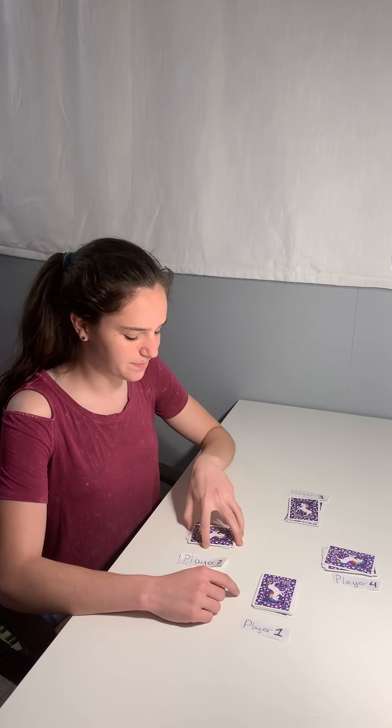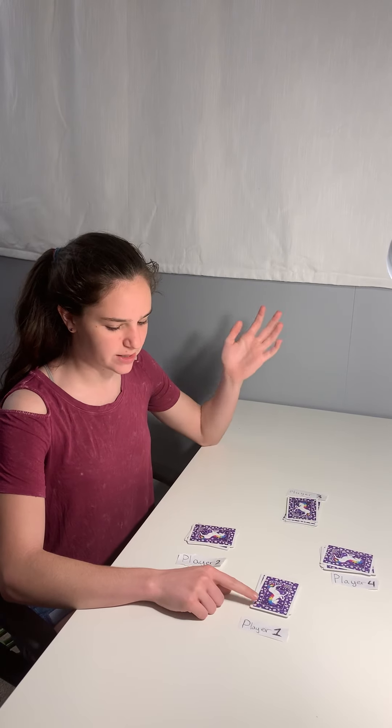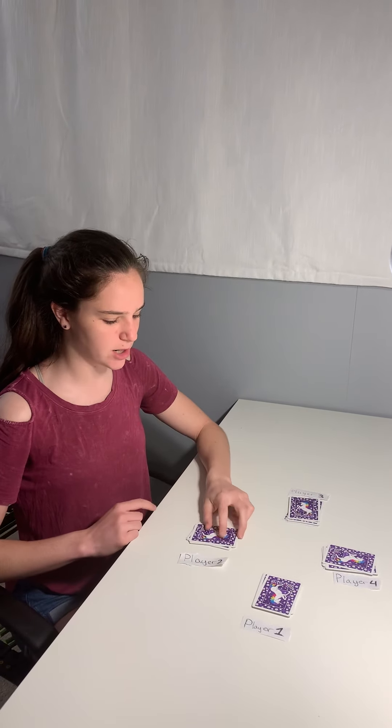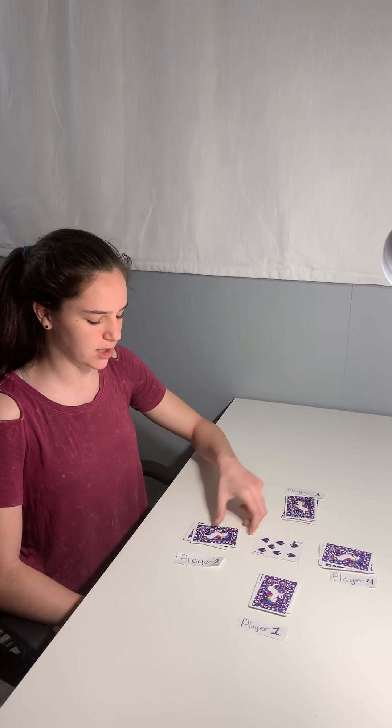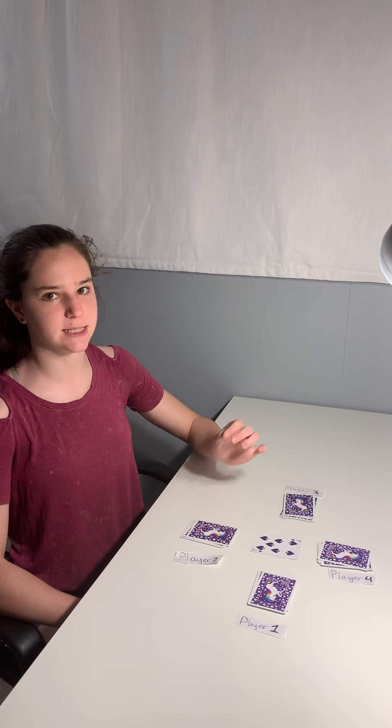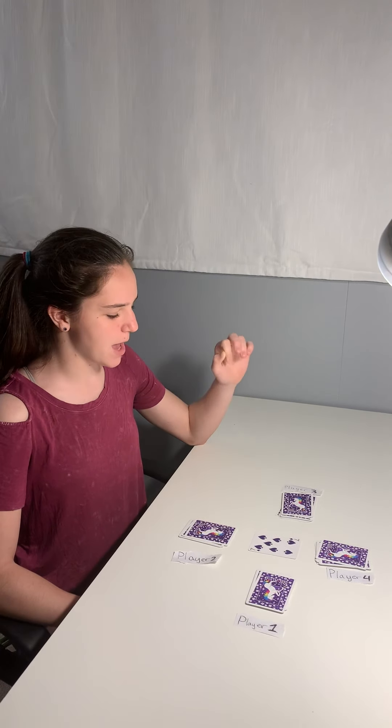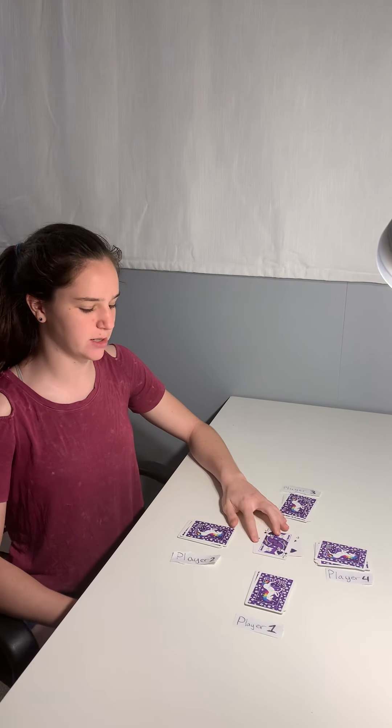The start goes from the player left of the dealer, so if player one dealt, player two would start. They put a card out into the center, making sure to flip it away from them so that everyone else can see it before they do. Then they would continue in a circle, so player three would go next, until a face card appears.